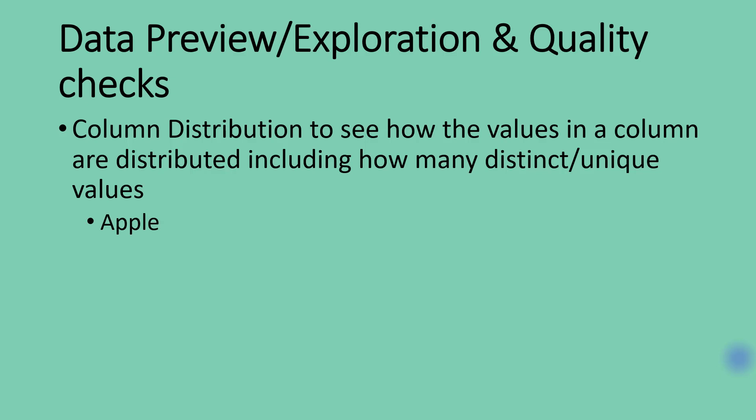Most people are usually confused by the difference between distinct and unique, but let's take a look at this list. If you have apple and another apple, and orange and another orange, and a lime — we have in total five fruits, but out of these five we actually have just three distinct fruits: apple, orange, and lime. Out of those three distinct fruits, we only have one unique fruit, which is lime, because it is the only one that appears only once. So distinct is going to count every value in a column without counting anyone twice, while unique is going to count the values that do not appear more than once.